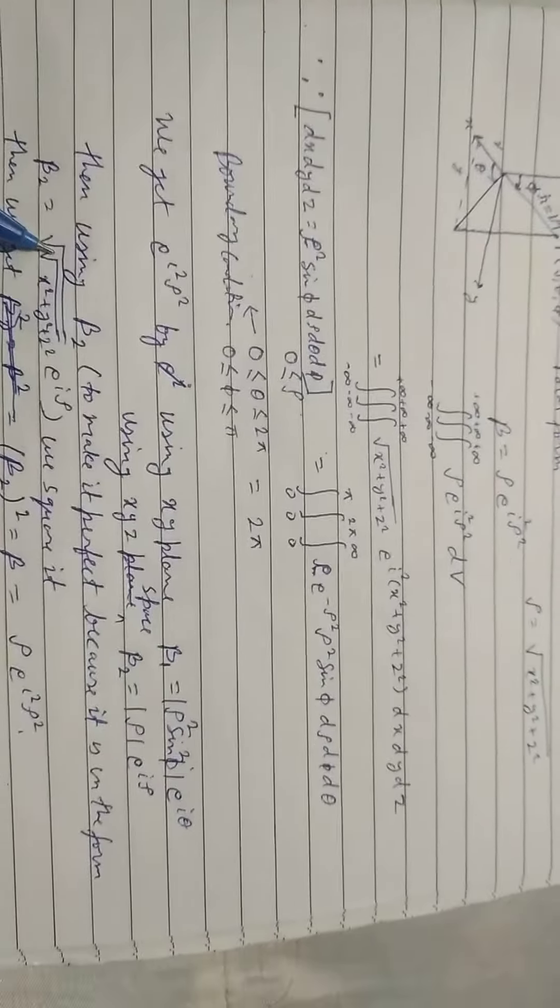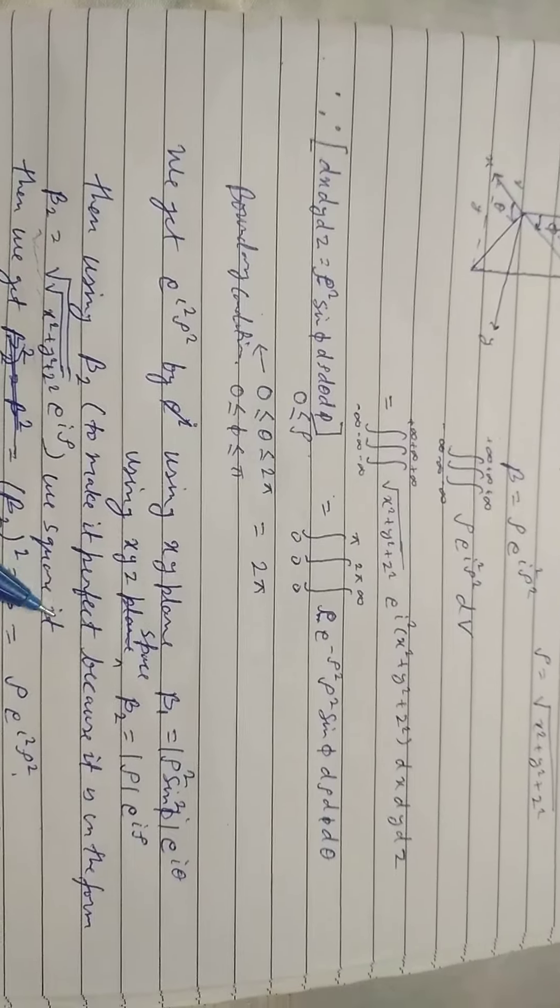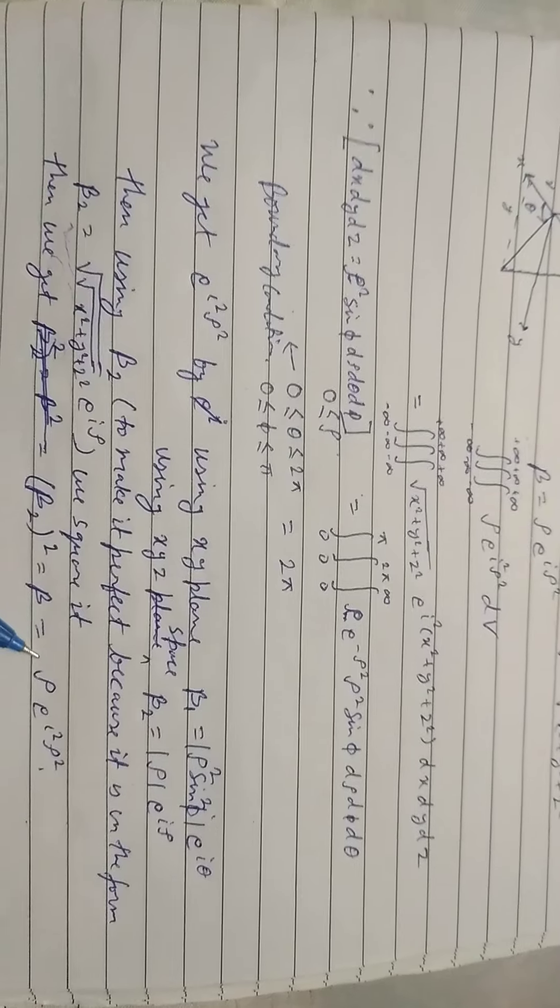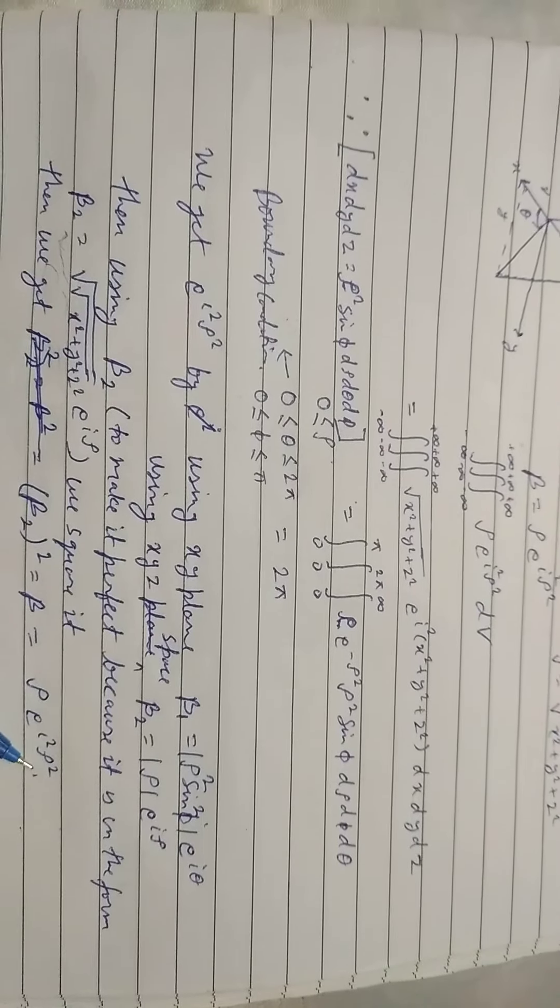Then using beta 2 to make it a perfect square because it is in the form of beta 2 is equal to root over root over x square plus y square plus z square e to the i rho. We square it. Then we get beta 2 square is equal to beta is equal to rho e square i square rho square.